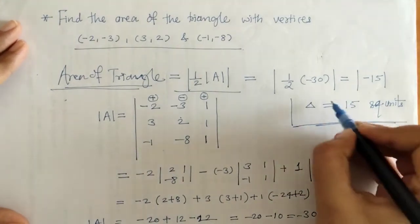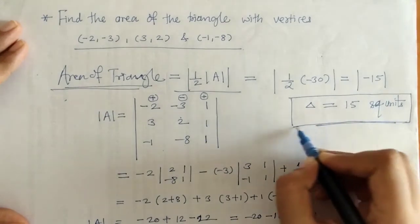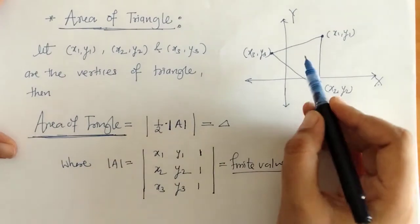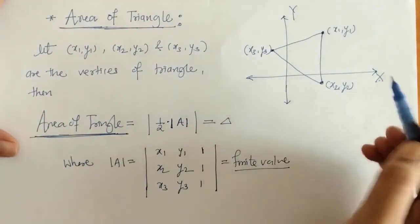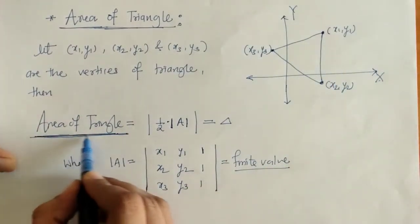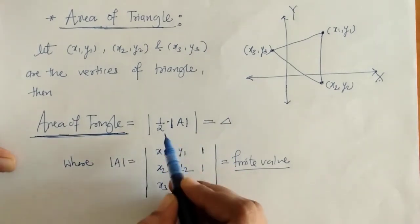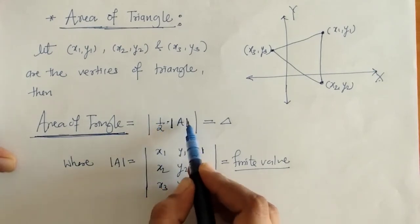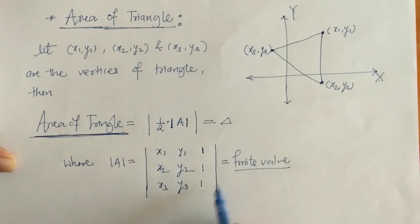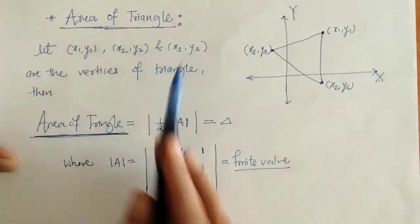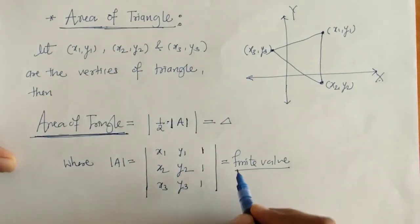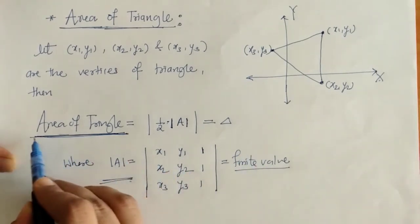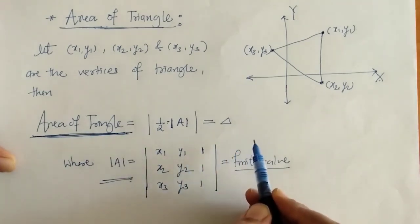So we got the required area. When we are given three vertices of a triangle, we can find the area of the triangle using this formula: mod of 1/2 into determinant of A. We write all three vertices into the determinant matrix so that we can solve it and find the required area.